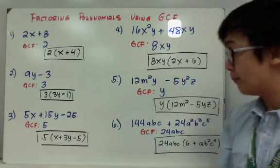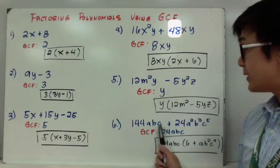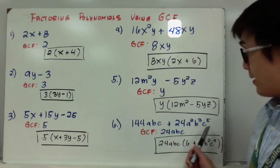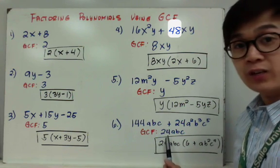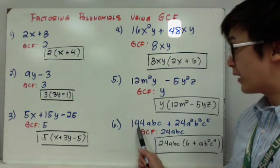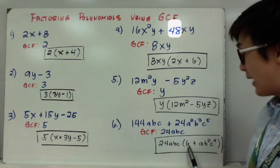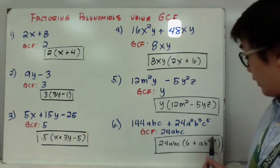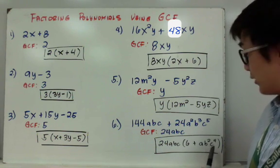And for the last example, I have 144abc plus 24a squared b cubed c to the fifth. My greatest common factor is 24abc. If you pull it out or divide it with 144abc, you'll get 6. Divide it to 24a squared b cubed c5, you'll have ab squared c to the fourth.